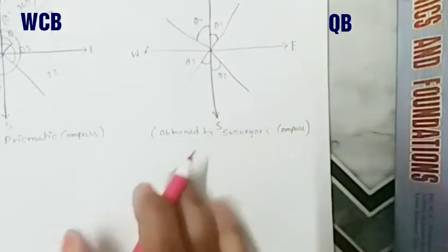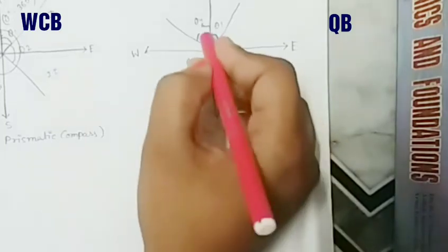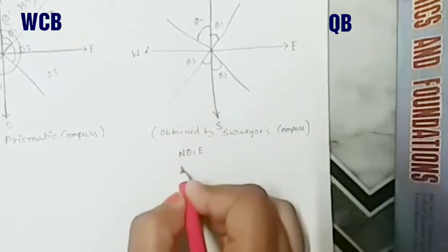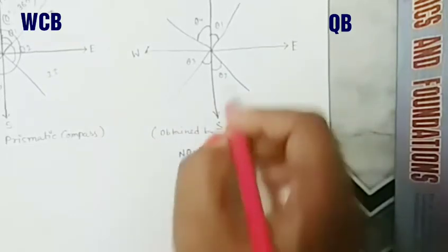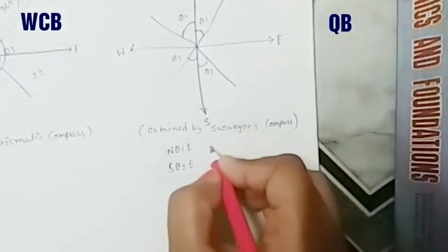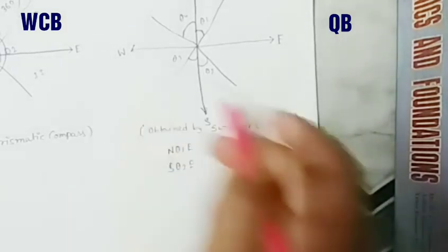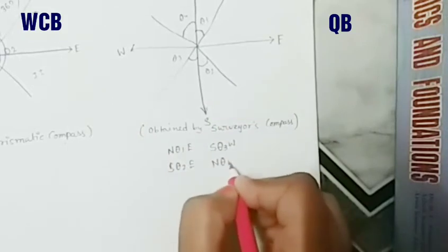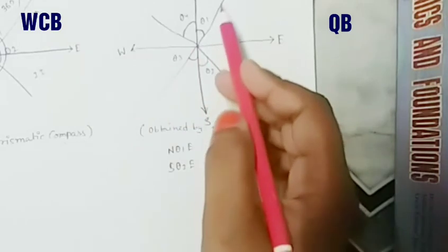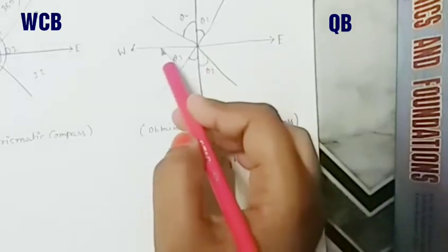The value can be written with the mentioned coordinate position. Theta one is written as North theta one East, because this angle is in between north and east. Theta two is written as South theta two East, because this angle is between south and east. Theta three is written as South theta three West, because this is in between south and west. Theta four is written as North theta four West, because this angle is between north and west.